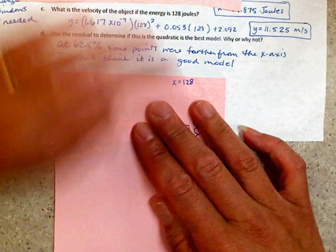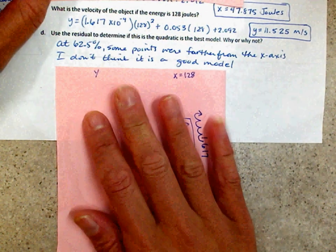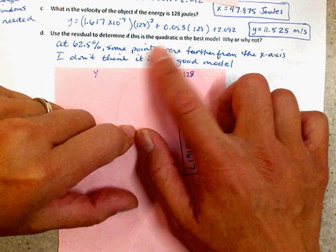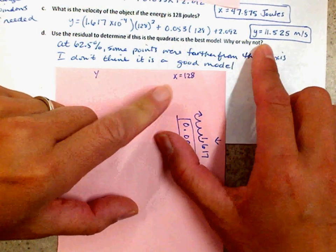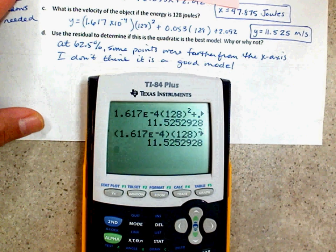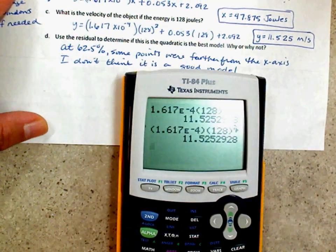Now, before we move on, I've got to show you how to find B as well. But we'll come back to that. It says, use the residual to determine if this quadratic is the best model. Why or why not? Alright. So, how do I do this? So, you can look at it. You can look at your R. It says 62.5%. Or you could do it this way.